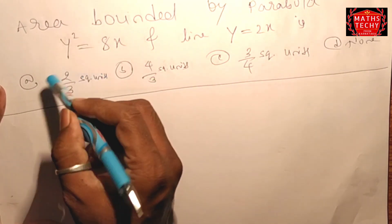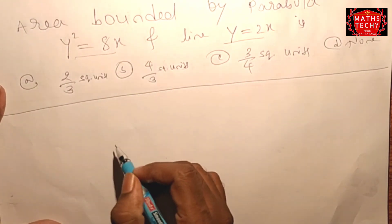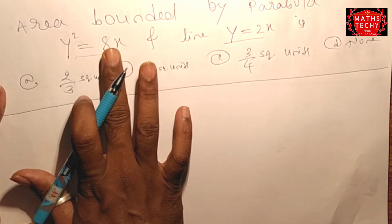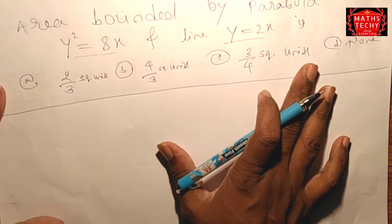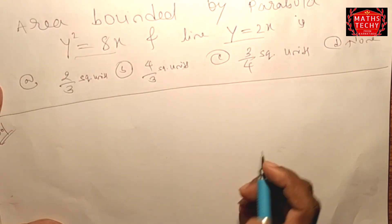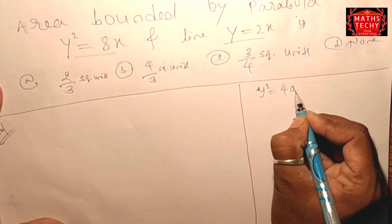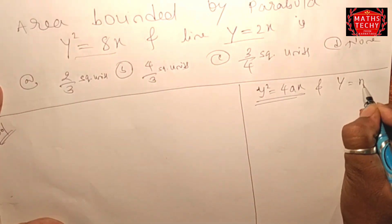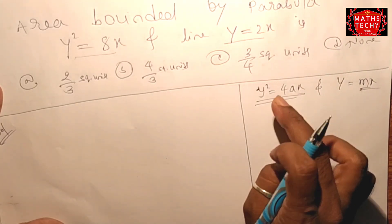The area is bounded by a parabola. Here is a parabola, here is a graph, here is a parabola and a line.